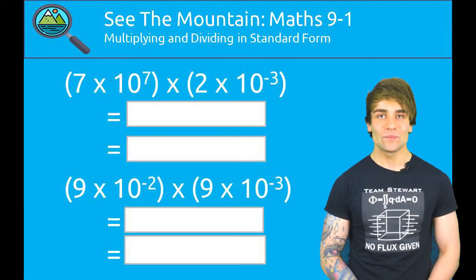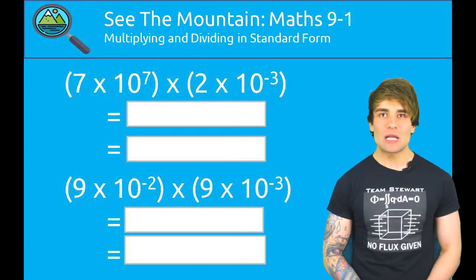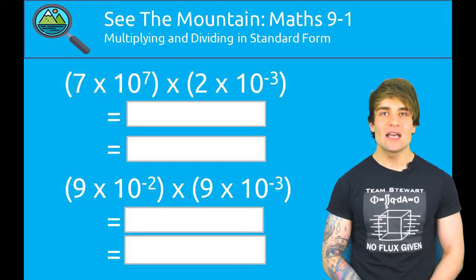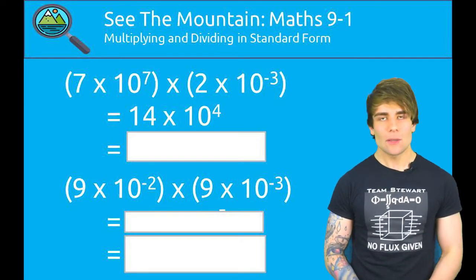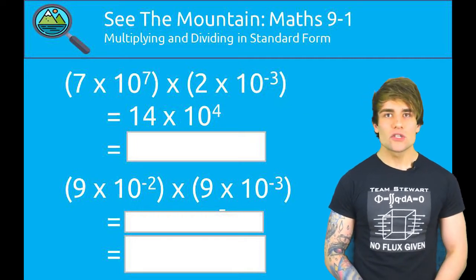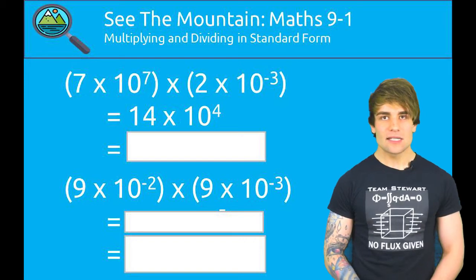Here's one for you to try. Hopefully you found that 7 times 10 to the 7 multiplied by 2 times 10 to the minus 3 gave us, well, first of all, 14. But what's the power? Well, 7 plus minus 3 gives us 4. So hopefully you found the final answer should have been 14 times 10 to the 4.